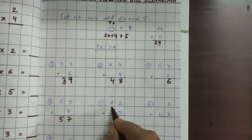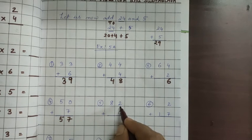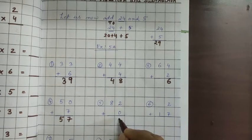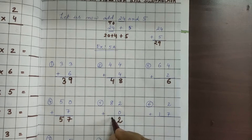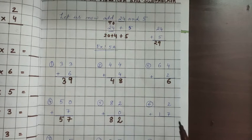Next, let us see the next one. 82, 8-2, 82 plus 0. So 2 down 0 is there. 2 plus 0 is 2, and 8 down nothing is there. So direct 8 will come down. It is easy, no children?